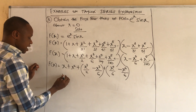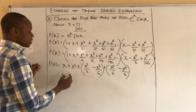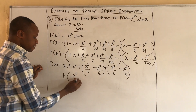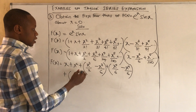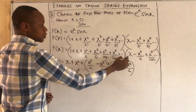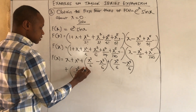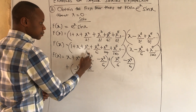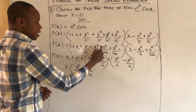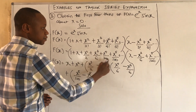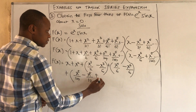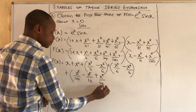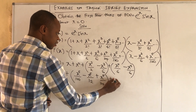For the term in x⁵, we have to be careful. The 1 times x⁵/120 gives x⁵/120. Then x²/2 times (−x³/6) gives −x⁵/12. And x⁴/24 times x gives positive x⁵/24, with other terms.